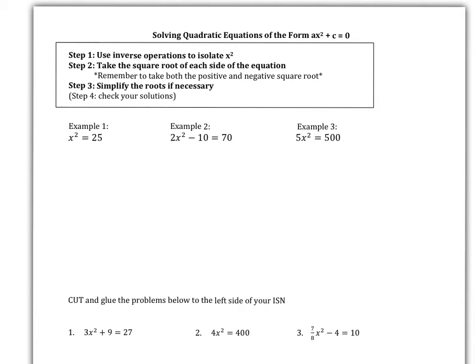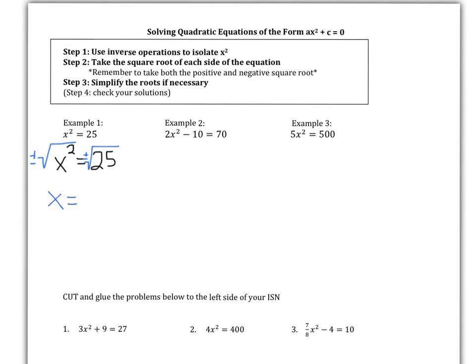For example 1, it says x squared equals 25. So x squared is already isolated, so I'm going to take the positive and negative square root of each side. That symbol with the plus over the minus indicates the positive and negative version. So we get x equals positive or negative 5, because the square root of 25 is 5 — 25 is a perfect square. You can also write that as x equals 5 or x equals negative 5. We could check: 5 squared equals 25, and negative 5 squared equals 25.